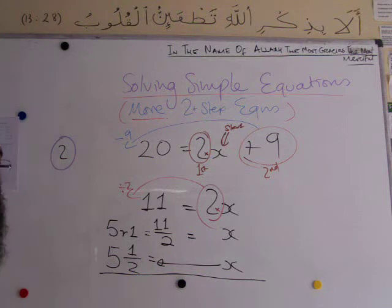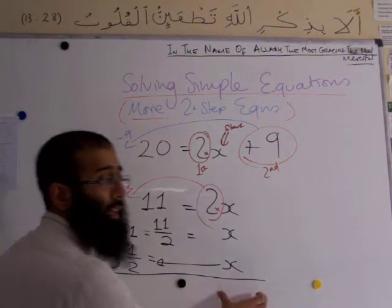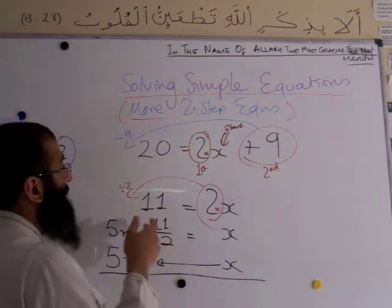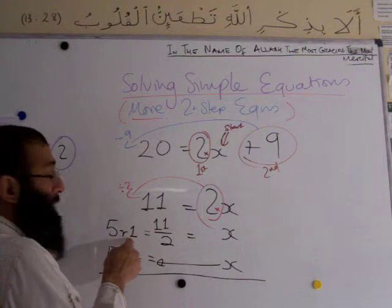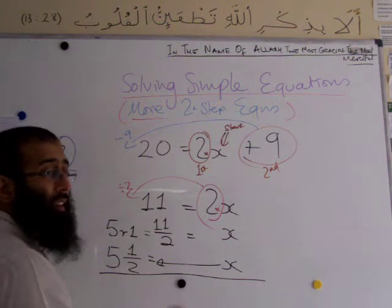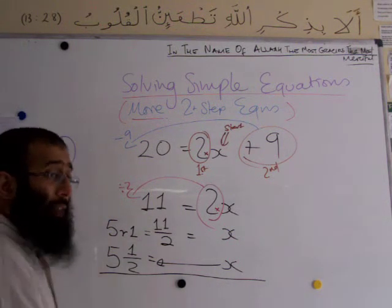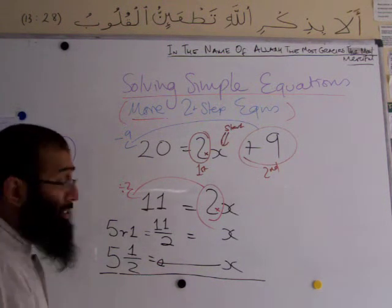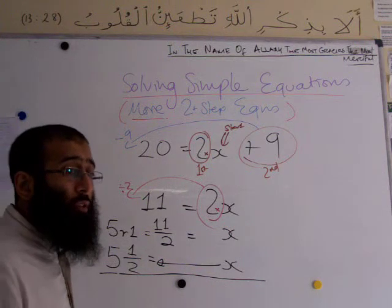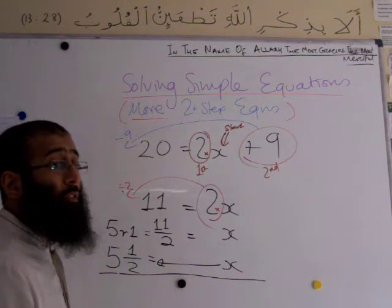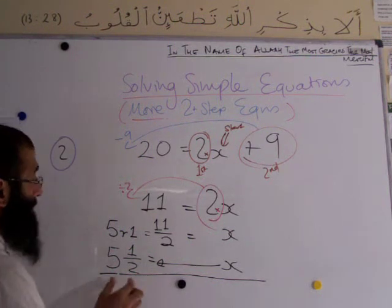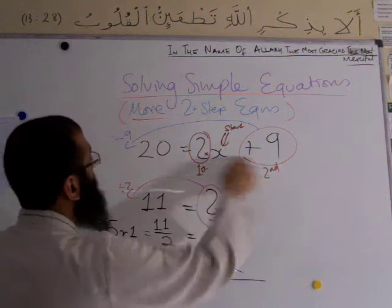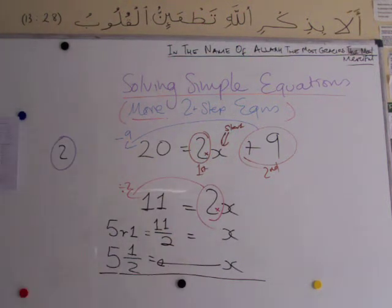X equals 5 and a half — it doesn't matter which way we write it. In mathematics, we do get remainders, fractional answers, negative fractional answers, and decimal answers. Don't automatically think you've done it wrong. Let's check: 2 times 5 and a half is 11, and 11 plus 9 is 20. It works — fantastic!